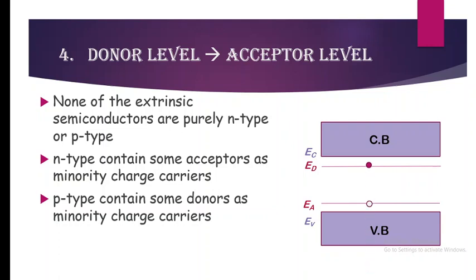The donor level has free electrons (donors) while the acceptor level contains holes (acceptors) due to doping. Because of the opposite charges, the electron can de-excite from the donor level to the acceptor level.